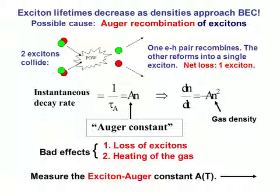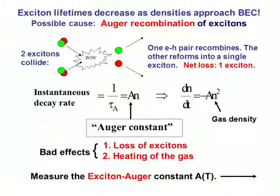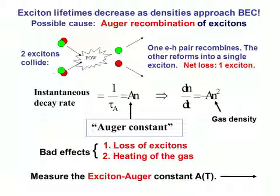Unfortunately, as the gas density is increased, the exciton lifetimes decrease, limiting the density to well below that for Bose condensation. This density-dependent lifetime has been attributed to Auger recombination.